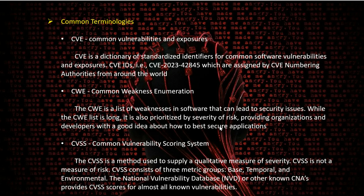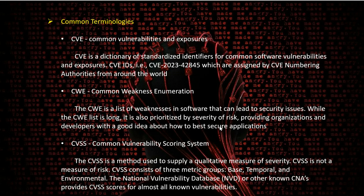CWE — Common Weakness Enumeration — is a list of weaknesses in software that can lead to security issues. The CWE list is extensive and prioritized by severity of risk, providing organizations and developers with guidance on how best to secure their applications. CVSS — Common Vulnerability Scoring System — is a method used to supply a qualitative measure of severity. It is not a measure of risk, but consists of three groups: base, temporal, and environmental metrics. The CVSS score can be found for any CVE ID that is publicly disclosed on the open-source links covered previously.